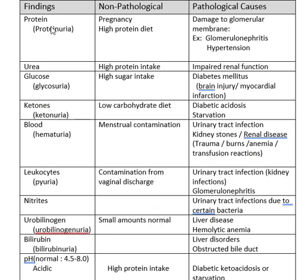This table is nice because it says what happens if you have proteins — proteinuria. Non-pathological causes would be pregnancy or eating a lot of meat. If you eat bacon and eggs for breakfast, a hamburger for lunch, and a steak for supper, you're probably going to have some protein coming out in your urine because your body can't handle that much protein. Pathologically, if something has damaged the glomerular membrane — for example, hypertension — proteins will appear.